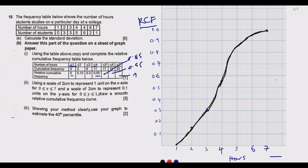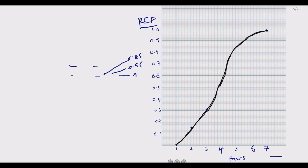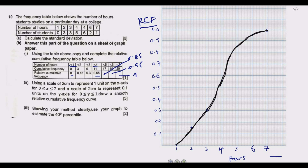Once you've joined the points, you should have a smooth ogive curve. Remember in your exam, each square on the graph paper will be 2 centimeters. Drawing it this way earns you the other three marks, bringing your total to 10 marks for this part.